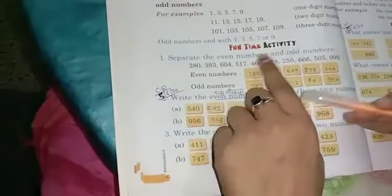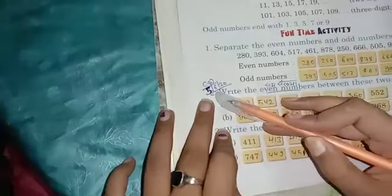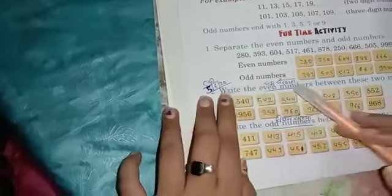Which was my live class, and today I have asked you question number 2. Date is 5-6-2020, and the question is write the even numbers between these two numbers.